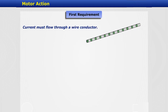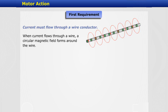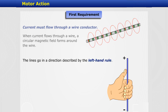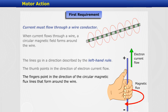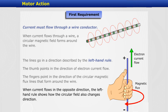Current must flow through a wire conductor. When current flows through a wire, a circular magnetic field forms around the wire. The lines go in a direction described by the left-hand rule. The thumb points in the direction of the electron current flow, and the fingers point in the direction of the circular magnetic flux lines that form around the wire. When current flows in the opposite direction, the left-hand rule shows how the circular field also changes direction.